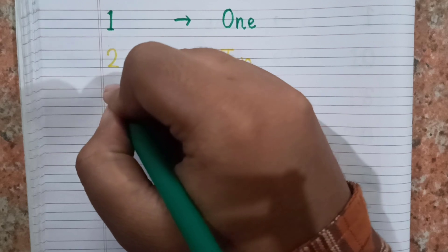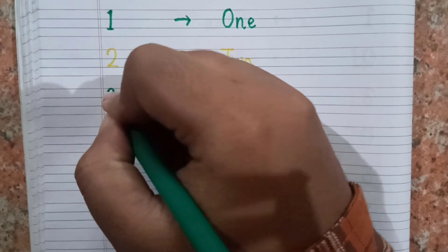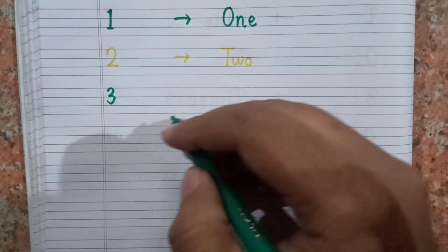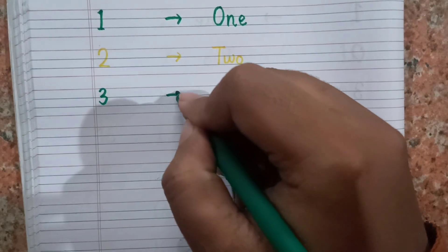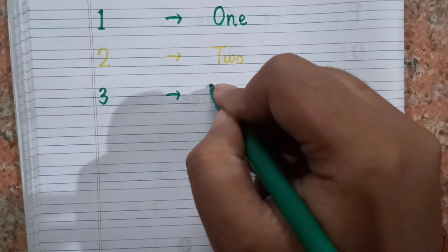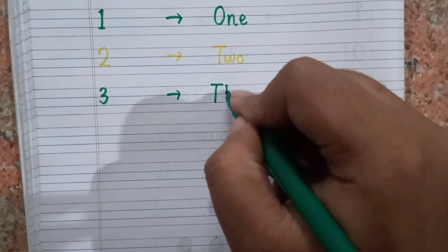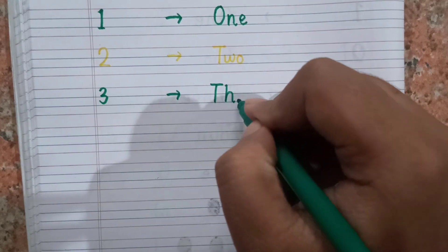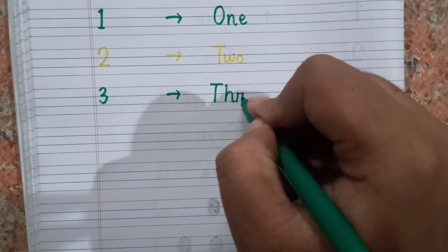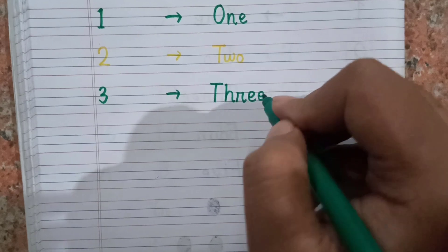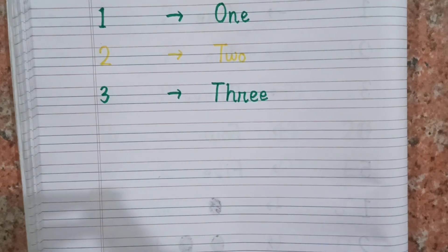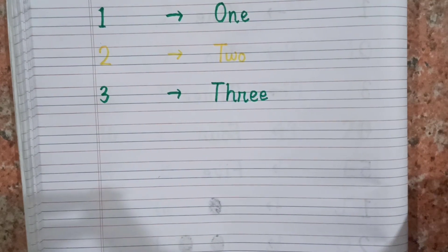After two, the next number is three. This is three, and the spelling of three is T H R E E. Three.